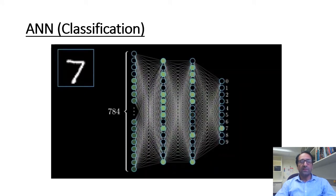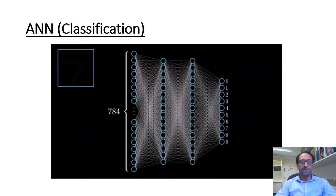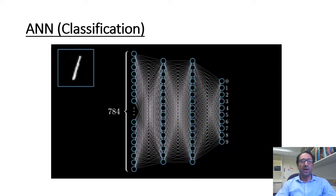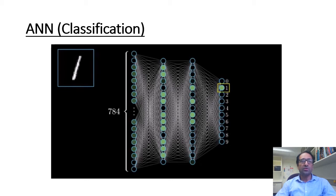This is how a trained artificial neural network performs classification. The network parameters or weights are adjusted during the training process, and the training itself is performed either in a supervised or unsupervised way. In supervised training, the network is provided with data and labels, while in unsupervised training, unlabeled data is provided to the network.